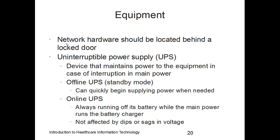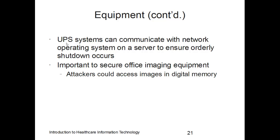Network hardware should be located behind a locked door. A standard piece of equipment is a UPS — uninterruptible power supply — which maintains power to equipment during an interruption in the main power. These can be in offline or online mode. In offline mode they quickly begin supplying power when needed. An online UPS always runs off its battery while the main power runs the battery charger, and is not affected by power surges or voltage dips. UPS systems can communicate with a network operating system to ensure orderly shutdowns.